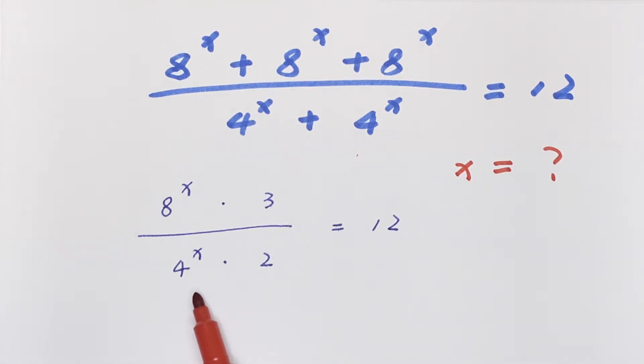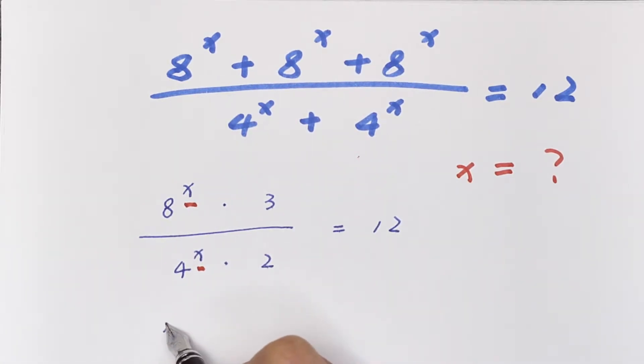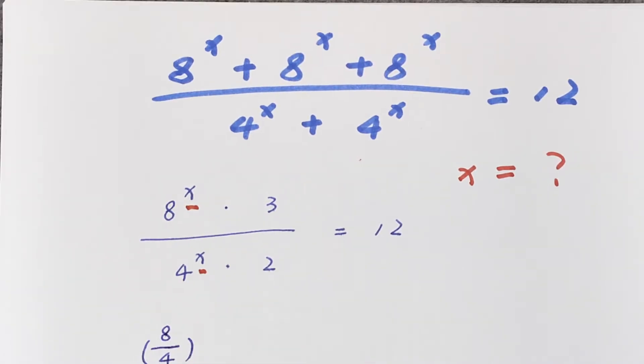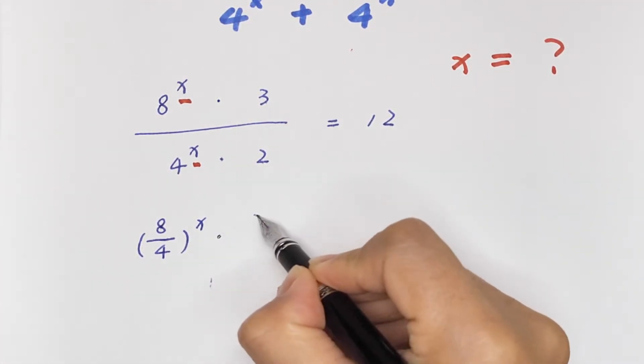Then in the next step, from this division of exponents to the same power, we get (8/4)^x times 3/2 is equal to 12.